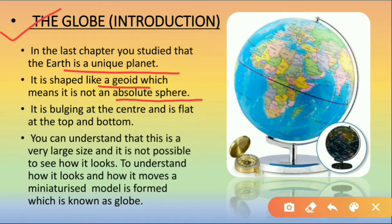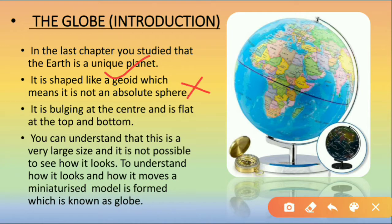The earth is shaped like a geoid, which means it is not an absolute sphere. The shape of the earth is geoid, not a perfect sphere. Have you seen an orange? It is the same shape as the earth — bulged out at the center and a little bit flat at the top and the bottom. That is actually the shape of the earth.